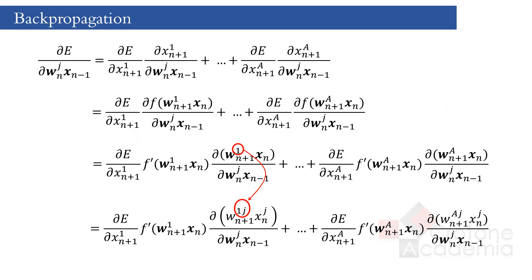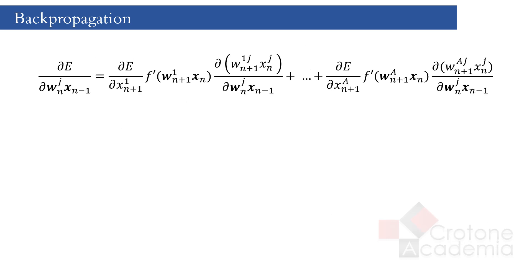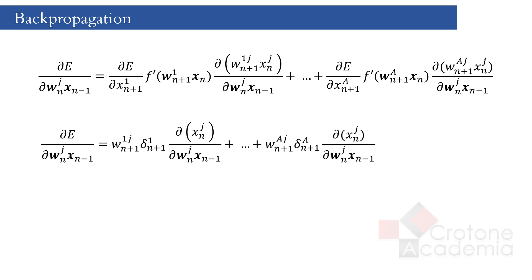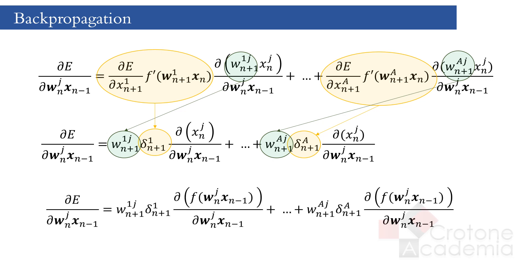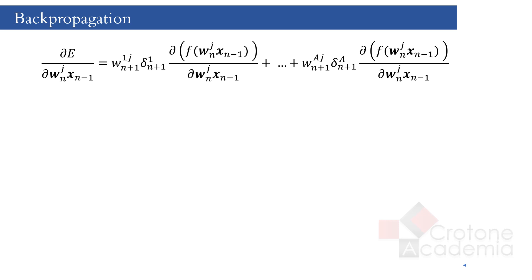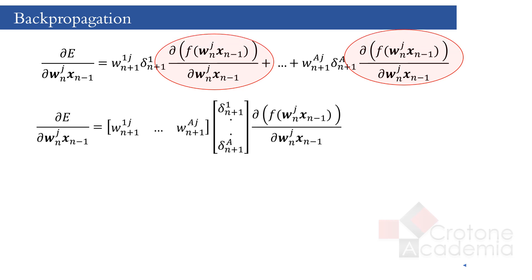As a result, we can write the derivative of the error at node j as a summation of error derivatives at layer n+1 multiplied by some parameters corresponding to layer n+1. We can simplify this equation further. The derivative of the error together with the activation function's derivative at layer n+1 can be called a new variable delta n+1. Because Wn+1 is a constant, we can take that out of the derivative. Next, we can write Xn in terms of the previous layer outputs multiplied by the weights with the activation function applied. The derivative part is common for all terms in the summation, so we can take that out. The remaining part can be written as a row vector of weights multiplied by a column vector of delta n+1.